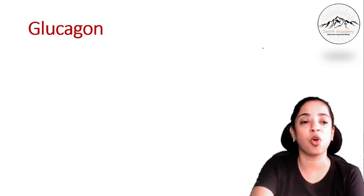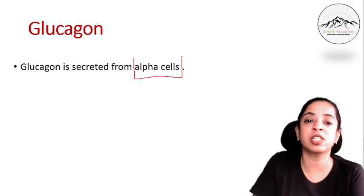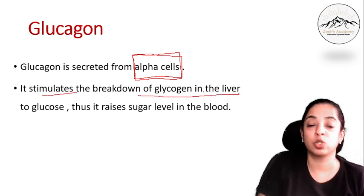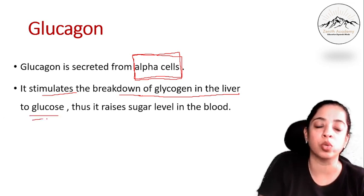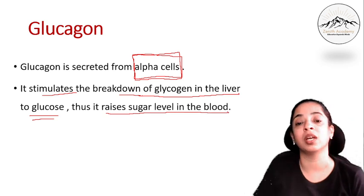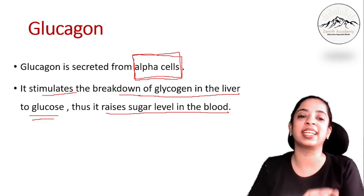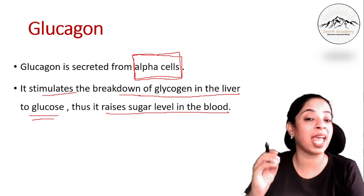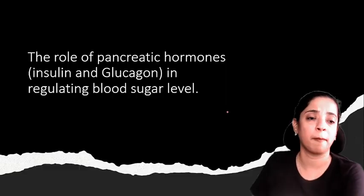Now let's talk about glucagon. Glucagon is secreted from alpha cells — insulin was secreted from beta cells and glucagon from alpha cells. Glucagon stimulates the breakdown of glycogen in the liver into glucose, and thus it raises the sugar level in the blood. So both hormones have opposite functions: insulin decreases the sugar level in the blood whereas glucagon increases it, by stimulating the breakdown of stored glycogen in the liver and converting it back into glucose.